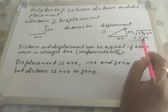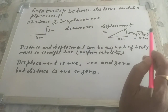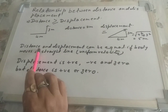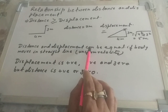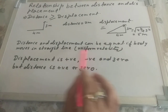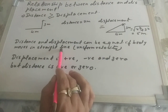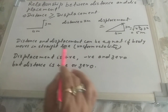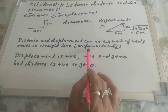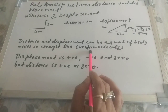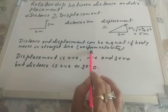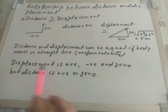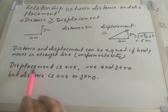That gives 5 meters. The second point is that distance and displacement can be equal if the body moves in a straight line, or at uniform velocity. Remember, there should not be any change in direction.